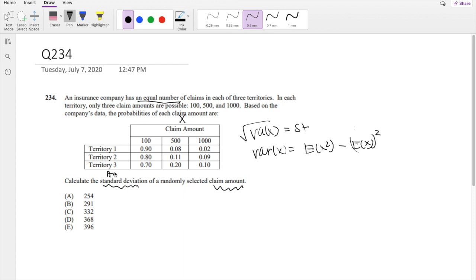So I'm going to put the average of the three here. So I'm going to do 0.9 plus 0.8 plus 0.7 divide by 3, which is 0.8. And then for 500, because we know it's equally distributed, we can add those three numbers again and divide by 3, which is 0.13. And lastly, 0.02, 0.09 plus 0.1 divide by 3, 0.07.